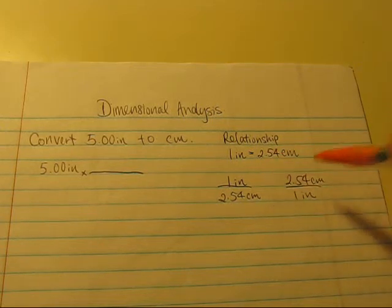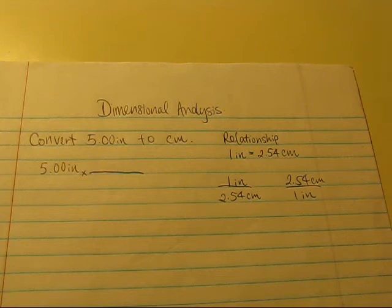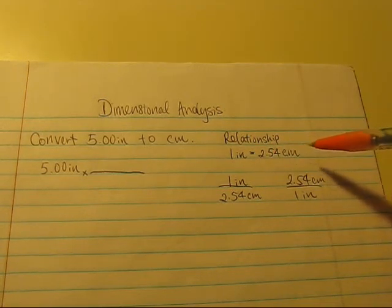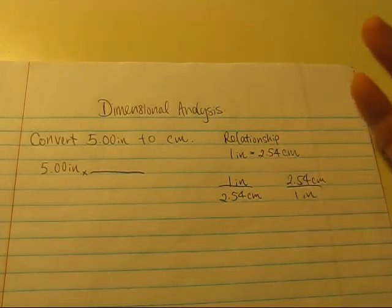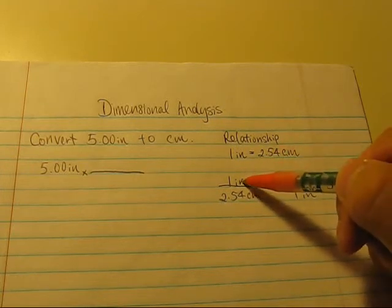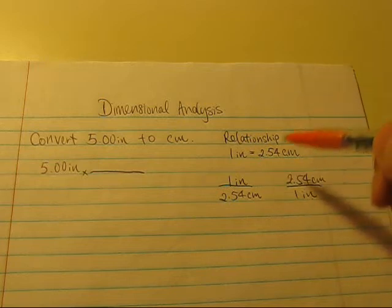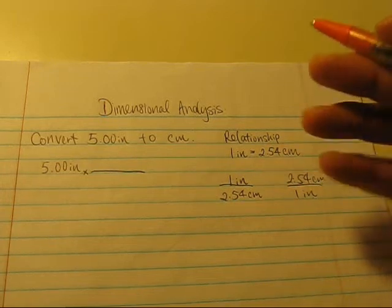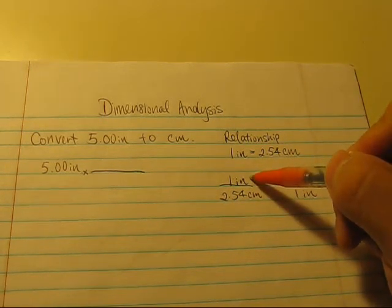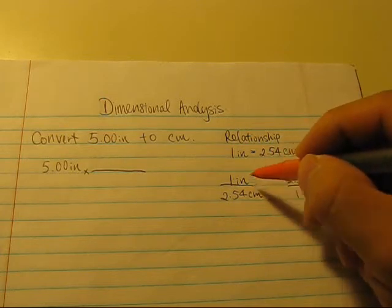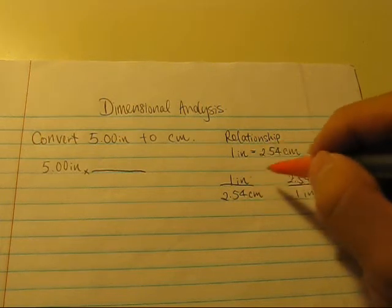So the reason why we can make these two conversion factors is based on the fact that they are both equal to 1. How is that 1? Well, let's look back to the relationship. 1 inch is equal to 2.54 centimeters. So they are all equal to each other. This is what the equal sign tells us. And when we put them into a fraction, 1 inch over 2.54 centimeters or 2.54 centimeters over 1 inch. Well, either way, what you find out is that 1 inch is equal to 2.54 centimeters. So although they look very differently, the numerator is equal to the denominator.